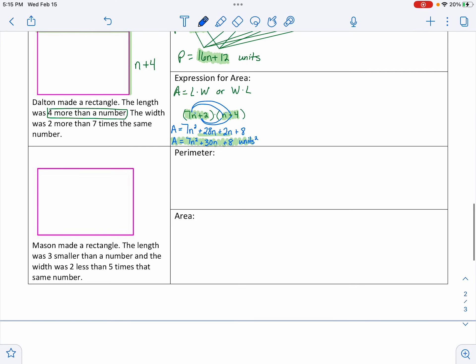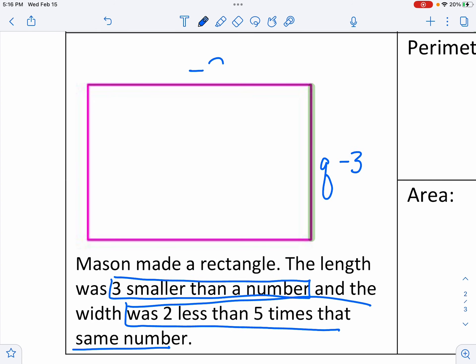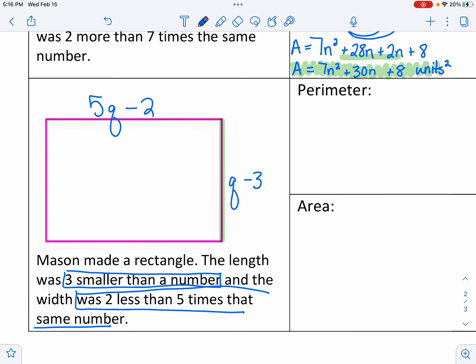I think I only have one more. And again, your favorite. We've got to set this word problem up, which we can do. Mason made a rectangle. The length was 3 smaller than a number. So I have to do 3 smaller than a number. That's hard for kids. A lot of kids think 3 smaller means 3 minus, but it doesn't. That means minus 3 than a number. You know what I'm going to pick this time, just to mess with you? I'm going to pick the letter Q. Kids freak out when I pick a different variable than X. And the width was 2 less than 5 times that same number. So here's 2 less and here's 5 times that same number. I have to keep it the same.